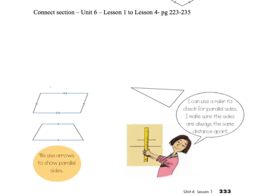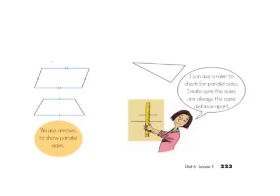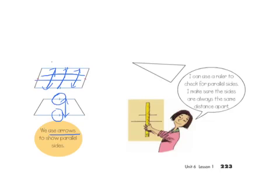Continuing on, this is the connect section of lessons 1 through 4, so it's a number of connect sections you can refer to if you'd like to. Here we're discussing parallel lines. These two are parallel lines. The two horizontal sides are parallel, all the same distance on each side. The two side lines are also parallel — they are the same distance apart. Here we have these two lines as being parallel, and you can see we use arrows to indicate that lines are parallel. If there is no symbol, you can always use a ruler to check that the lines are in fact the same distance apart.